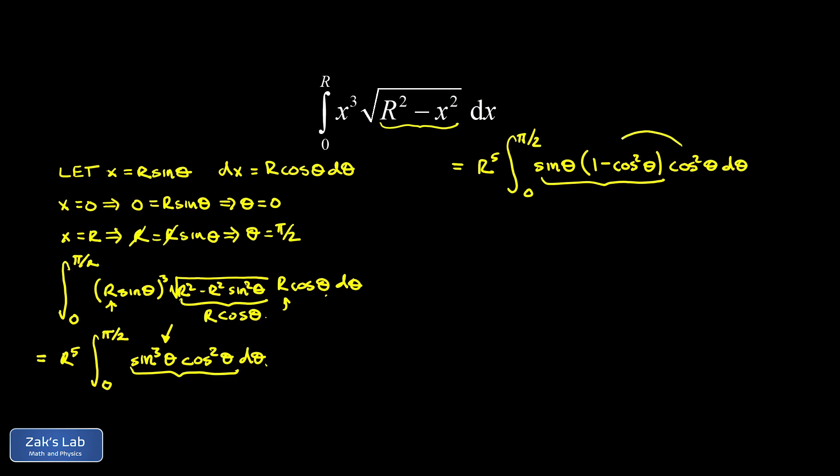So now I'm going to distribute the cosine squared into these parentheses, and I end up with sine of theta multiplying cosine squared theta minus cosine to the fourth theta d theta. And the whole point of this is I wanted to set it up so I can see the chain rule backwards. And that means looking for a power of a function, so a power of cosine sitting right next to the derivative of that interior function.